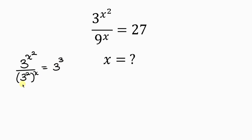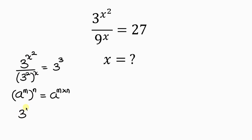Our next step is to apply the law of indices to what we have on the denominator. The law that says when I have a to the m, and this is raised to the n, this is the same as a to the m times n — the powers multiply. So we have 3 to the x squared, all over 3. Multiplying the powers: 2 times x is 2x, and this is equal to 3 to the 3.